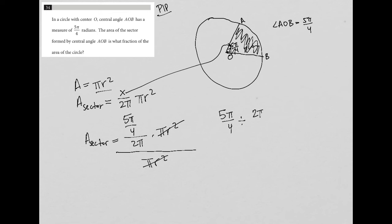So divided by 2π/1, which turns into 5π/4. When we divide fractions, we keep the first fraction the same, change the division to multiplication, and flip or rewrite the reciprocal of the second fraction.